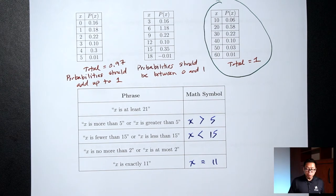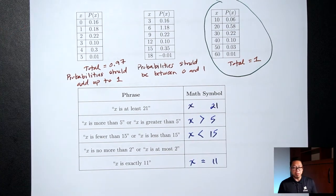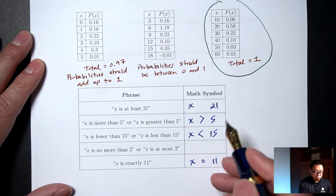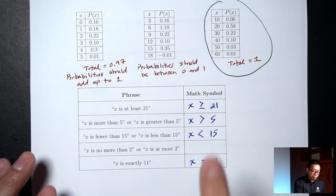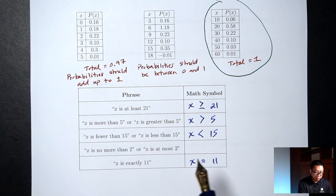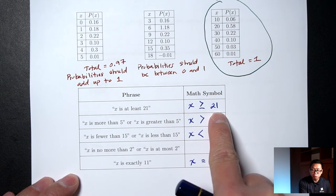The trickier ones: 'X is at least 21.' The way I remember this — you have to be at least 21 to buy alcohol in the US, meaning 21 or over. So 'at least 21' translates to X ≥ 21, using the greater-than-or-equal symbol, which has a line underneath. X > 5 means strictly greater than 5; X ≥ 21 means include 21, so 21 or over.